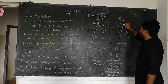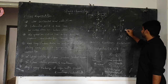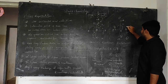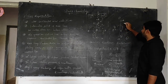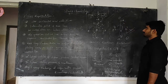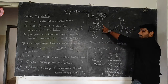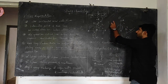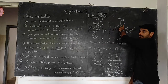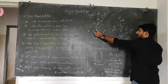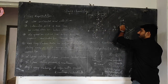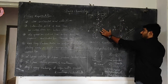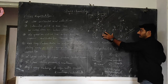For the mirror image of lactic acid, going 1→2→3 is clockwise, which would be R, but the least priority group is on the horizontal line, so R becomes S. Therefore, one lactic acid enantiomer has R configuration and the other has S configuration, confirming they are enantiomers.